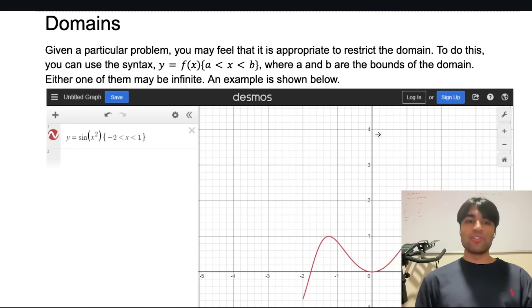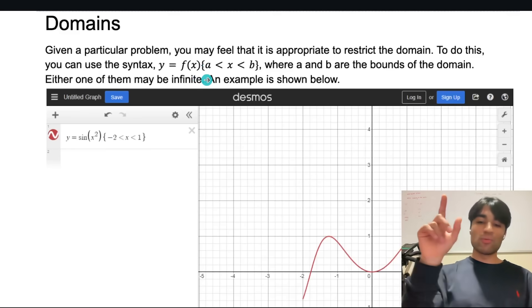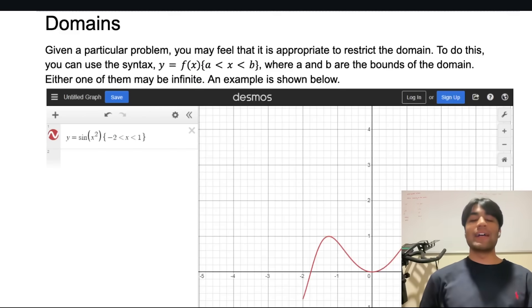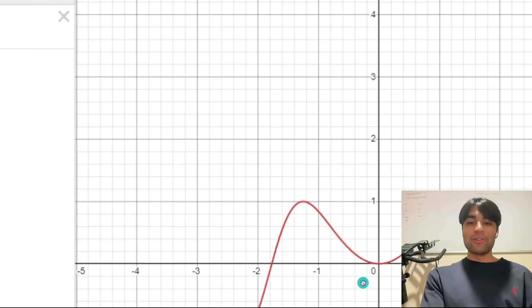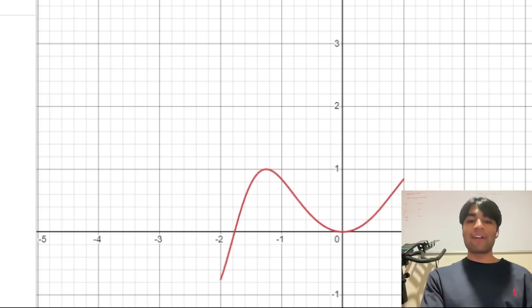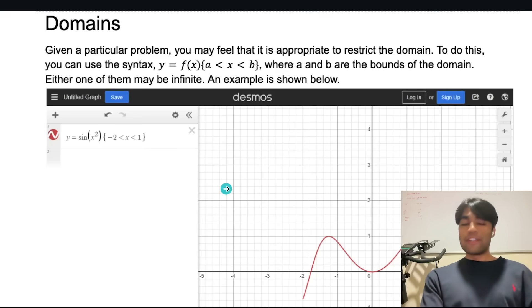This is probably the last very complex subject which is domains and so domains you know they restrict the bounds of like what your x value can be right and so as you can see we can actually represent this in Desmos as well and you can use this little squiggly square bracket notations rather than the square bracket if you do shift on the square bracket on your keyboard it'll put that little squiggly line in there and you can do you know a is less than x is less than b so you know the bounds of x are from negative 2 to 1 and as you can see Desmos will only graph that section of it so that's domains.